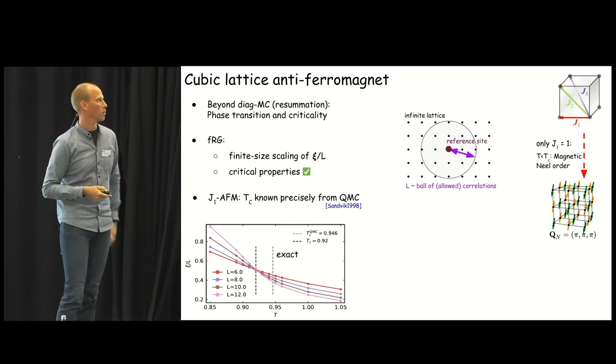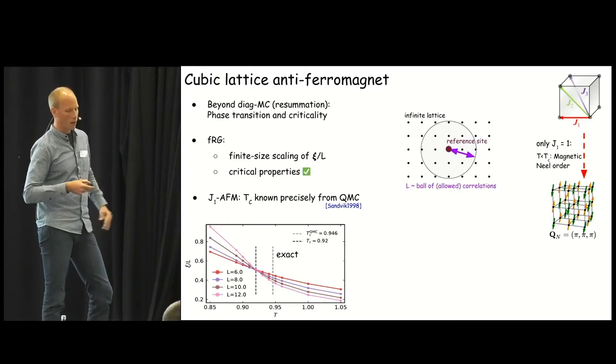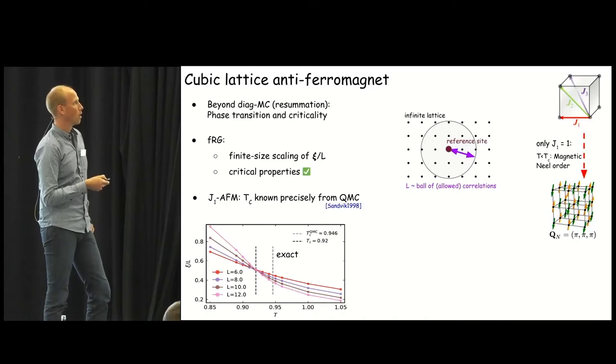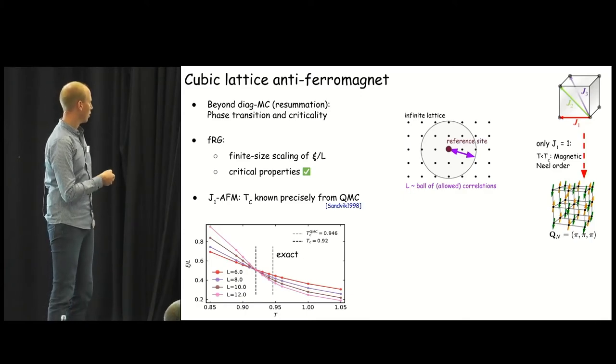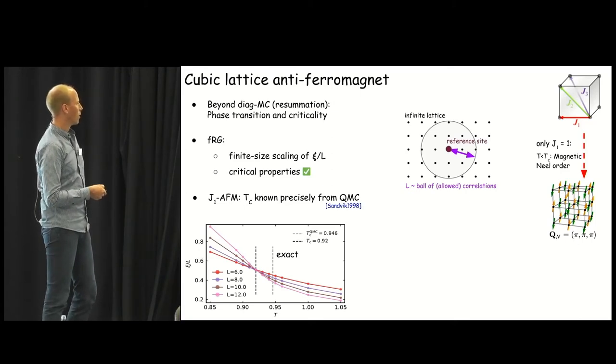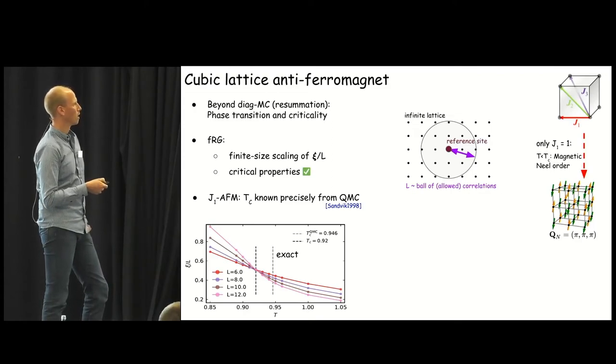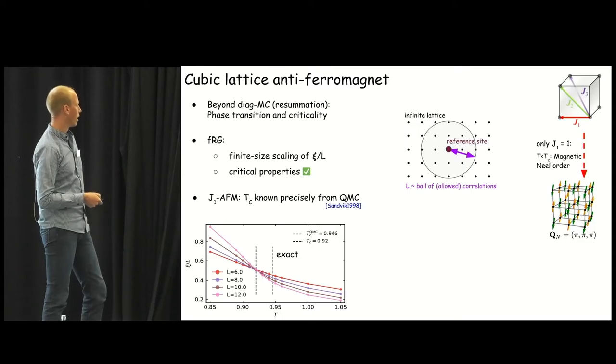We just use a reference site and the finite size is incorporated in our simulation by defining a correlation ball. So, only the sites within this gray ball have non-trivial correlations to the reference site, meaning there exist non-trivial vertices for these correlations. This defines a size L, and we can do finite size scaling of the correlation length over L, and this is this plot shown down here, and we see a nice crossing point around 0.92, temperature of 0.92. Now we can check what's the established Monte Carlo result, exact error-controlled Monte Carlo result for this lattice as it's a non-frustrated lattice, and this sits only 3% away at 0.946. This is the gray line. Very good. So, we have pinpointed the critical temperature quite exactly.